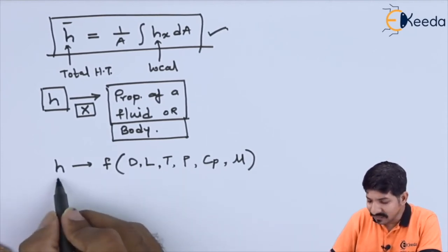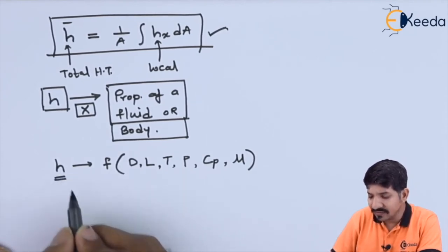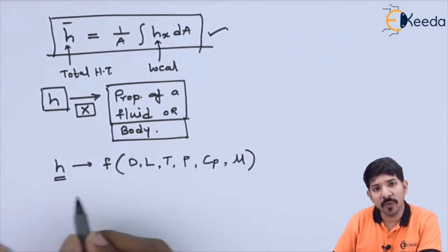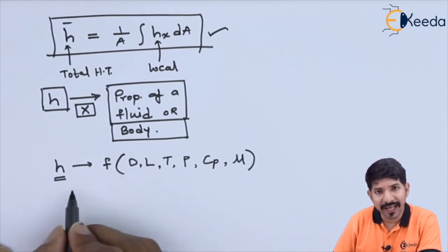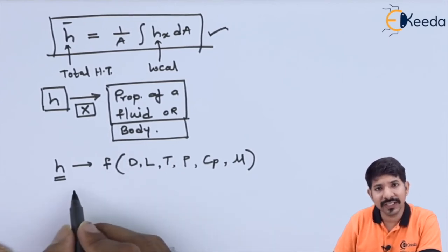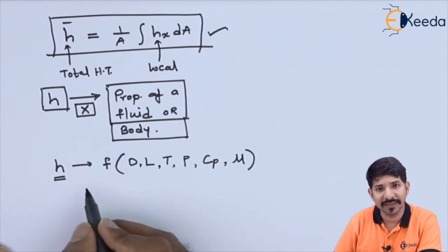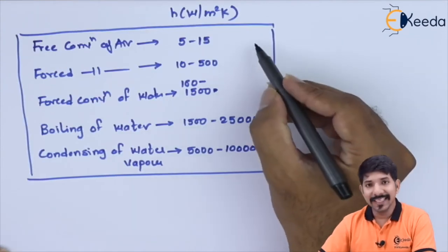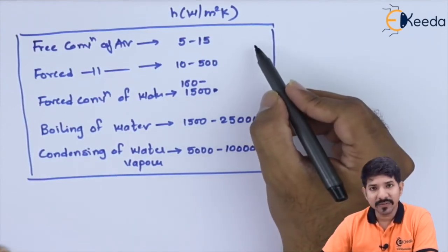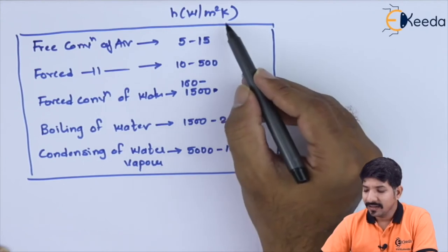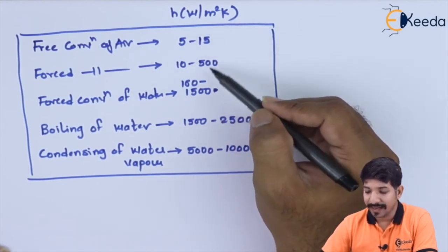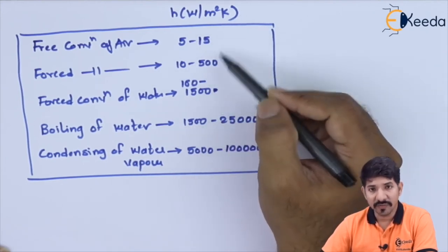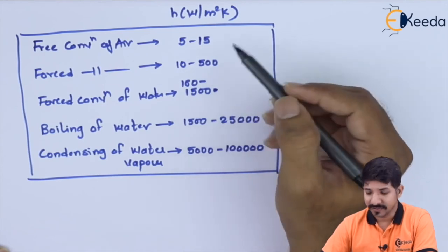The heat transfer coefficient also depends on the type of flow. For laminar flow, H may be lower compared to turbulent flow, where H is higher. It also depends on the type of fluid involved.